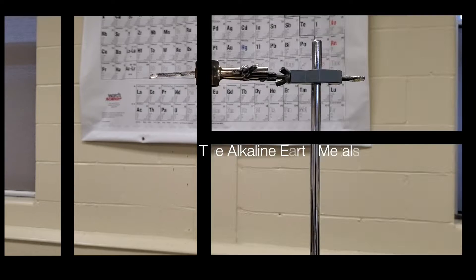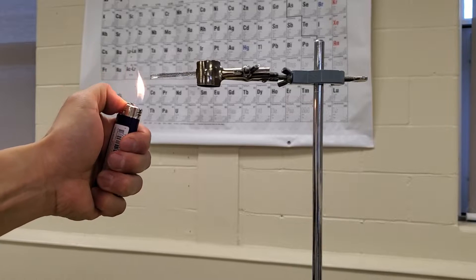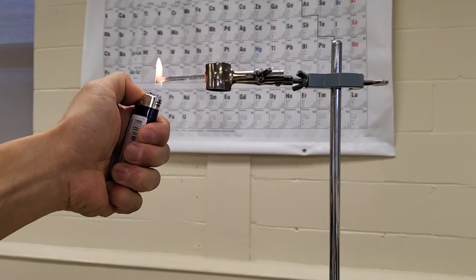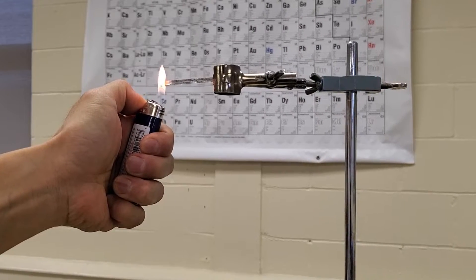This is Make Easy, the alkaline earth metals. That's a strip of magnesium. We'll take a closer look later and now I'll show you how it reacts with oxygen by burning it in air.